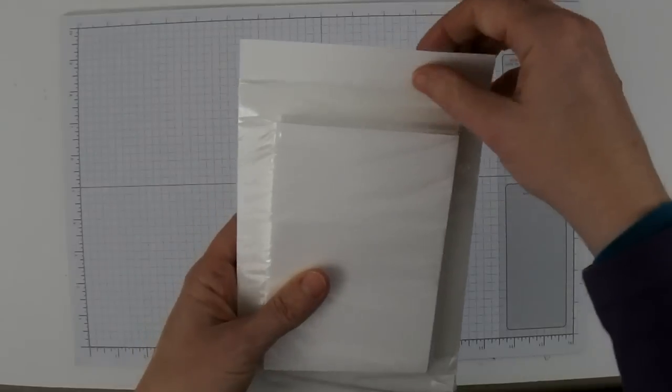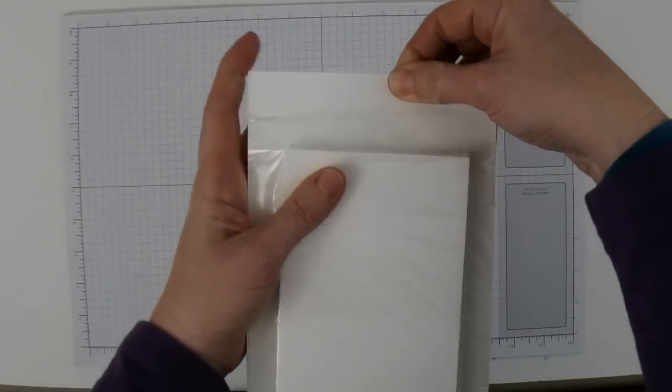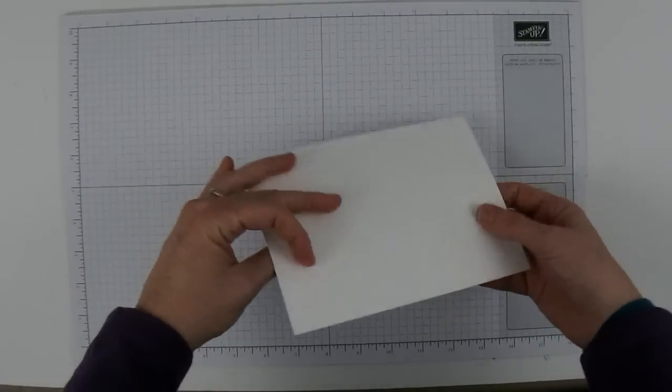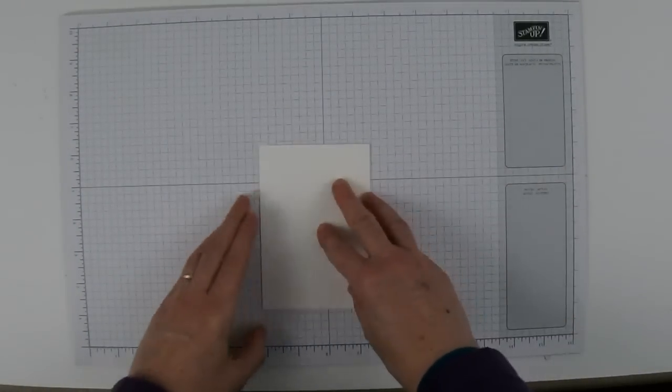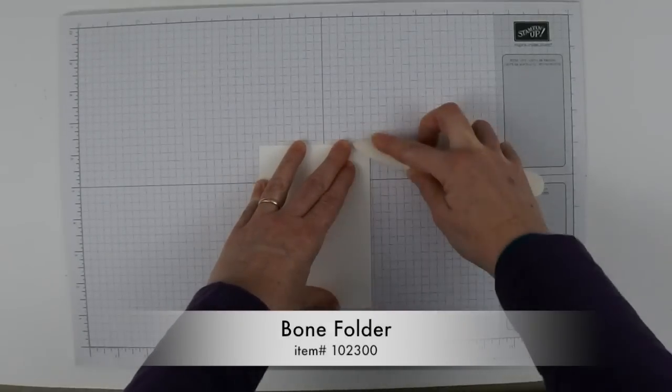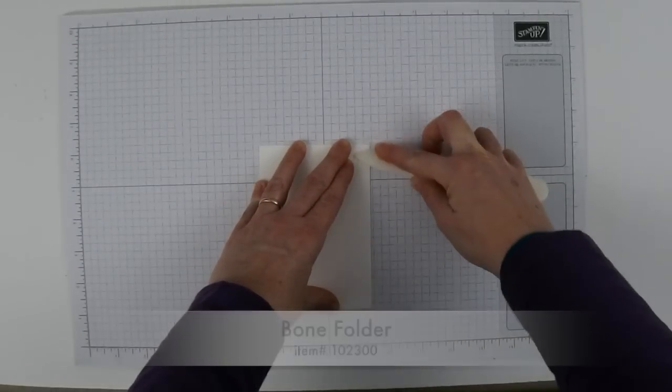Now we're going to need another note card from our Whisper White note cards and envelopes pack. This time I'm going to fold it along the score line right away, grab my bone folder which will help me smooth down that fold.